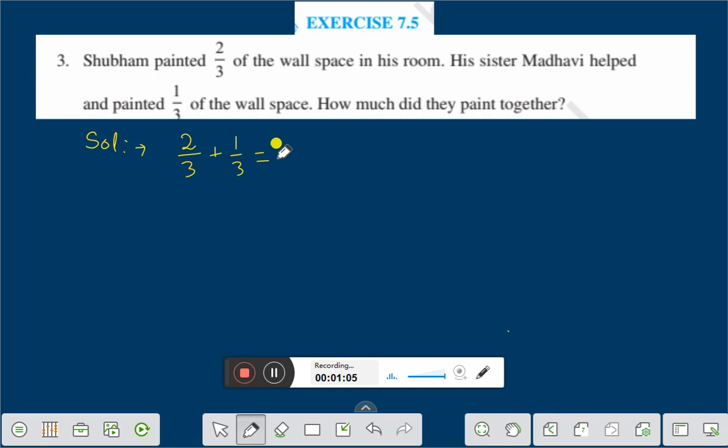Both the denominators are the same. We are going to take the denominator as 3. And that is 2 plus 1 is equal to 3. Is equal to 3/3. If we change into simplest form, 3/3 is equal to 1.